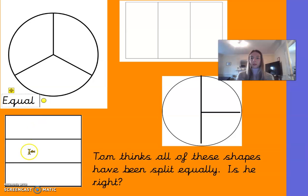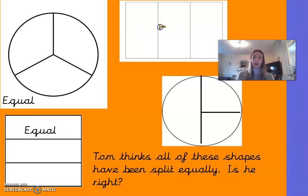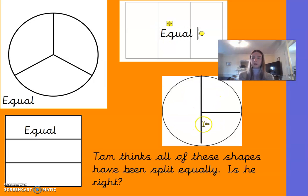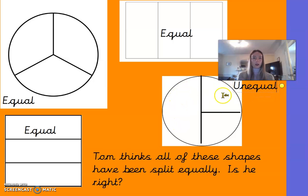The rectangle has three parts and they are also equal — all the same. The next rectangle is exactly the same but turned the other way around and it is also equal. What about the circle? Has it been split into three equal parts? No — the circle is unequal because one part is much larger than the other two parts.